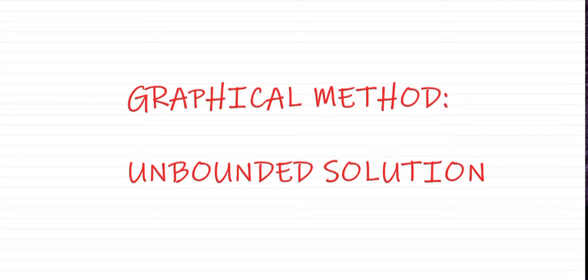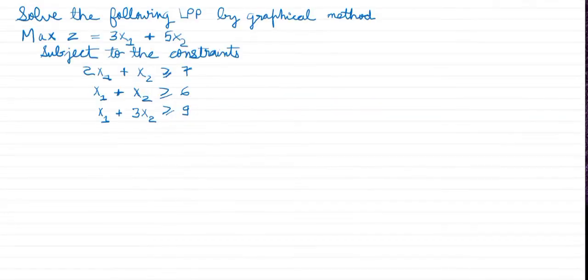The question given is solve the following linear programming problem by graphical method. Maximize z equals 3x1 plus 5x2 subject to the constraints 2x1 plus x2 greater than or equal to 7, x1 plus x2 greater than or equal to 6, x1 plus 3x2 greater than or equal to 9, and x1, x2 is greater than or equal to 0.